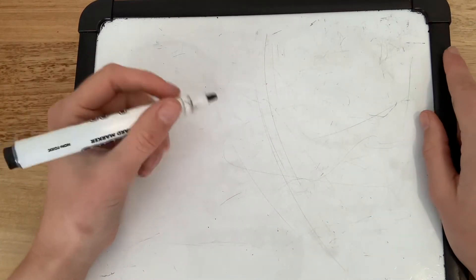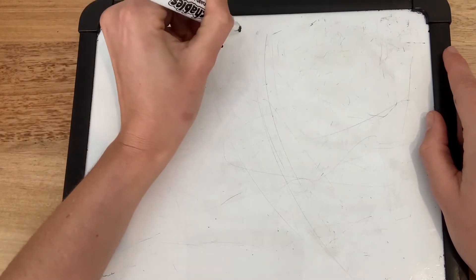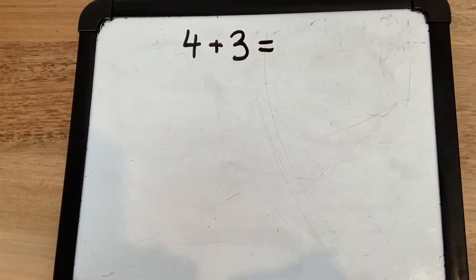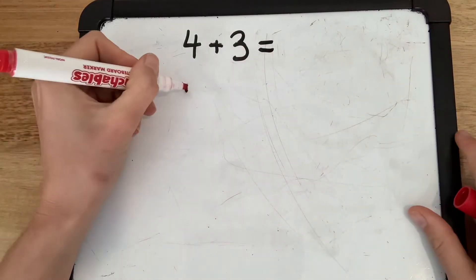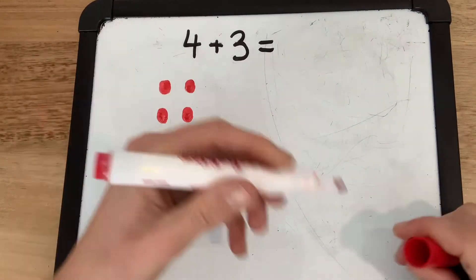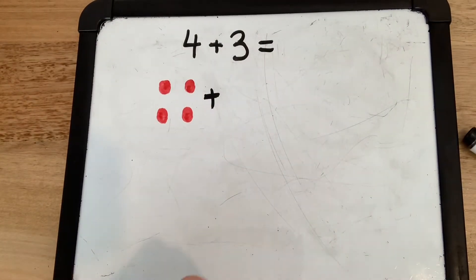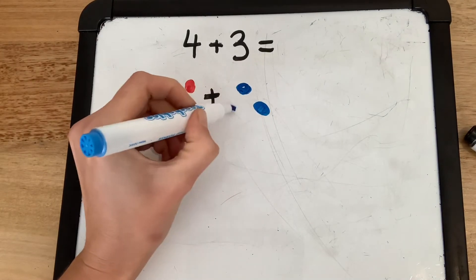My first addition I'm going to make might be 4 plus 3 and then equals. So I'm going to use two different colors to show both amounts. So here's my 4. 1, 2, 3, 4 and there's my plus and then the 3. 1, 2, 3.